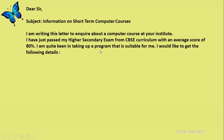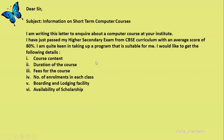I am quite keen on taking up a program that is suitable for me. I would like to get the following details. You can write them as bullet points: number one, course content; number two, duration of the course — how long the course runs, whether on alternate days or weekend batches; number three, fees for the course; and number four, number of enrollments in each class, so you can know whether it is in high demand.